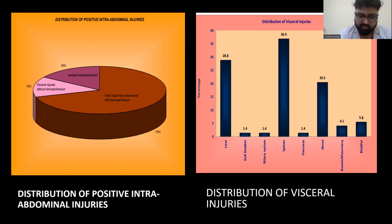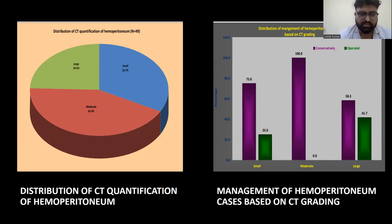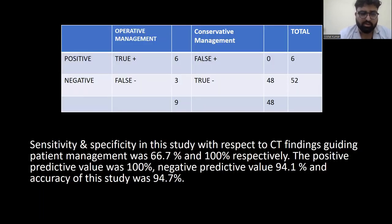Out of 57 cases, nine were immediately taken for surgery, while the rest were managed conservatively. CT quantification of hemoperitoneum was categorized as mild, moderate, or large; moderate hemoperitoneum was most commonly associated with blunt trauma. Conservative management was predominantly used for moderate hemoperitoneum. The nine surgical cases were confirmed, and additional bowel injury was found in three cases presenting with isolated hemoperitoneum. CT sensitivity was 100 percent in detecting hemoperitoneum.